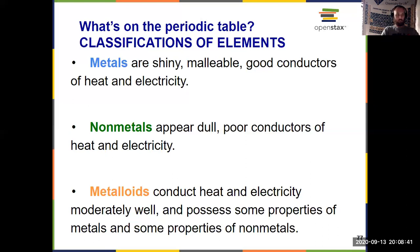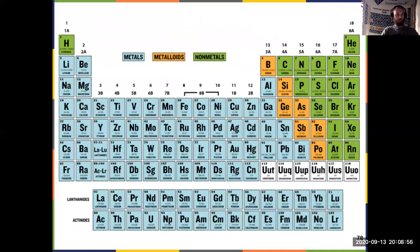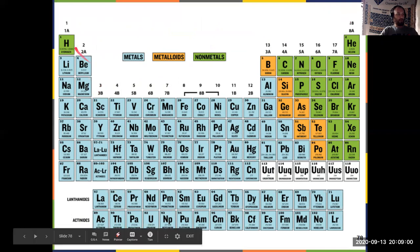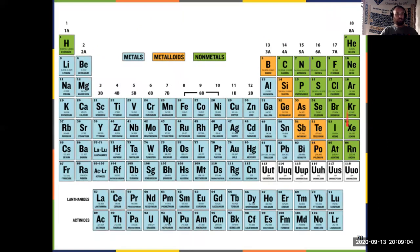And then we have metalloids, which conduct heat and electricity, have some properties of metals, some properties of non-metals. They're kind of halfway in between. And notice the colors here for metals, non-metals, and metalloids correspond to the colors on this slide here. So metals in blue on the left and on the bottom, just excluding hydrogen there. Hydrogen, along with everything else that's green, is a non-metal. And then the metalloids there in the middle, you can think about them as being a staircase, starting with boron and going down.